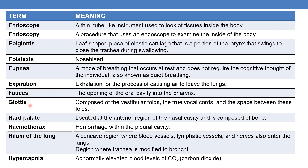The next term is glottis. It is composed of vestibular folds, the true vocal cords and the space between the folds. Hard palate is located at the anterior region of the nasal cavity and is composed of bone. Hemothorax is hemorrhage in the pleural cavity.